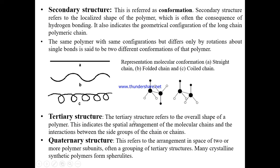Tertiary structure refers to the overall shape of the polymer — it indicates the spatial arrangement of molecular chains and the interactions between side groups of the chain or chains, including any intermolecular interactions between two polymer molecules. This overall spatial arrangement constitutes the tertiary structure.